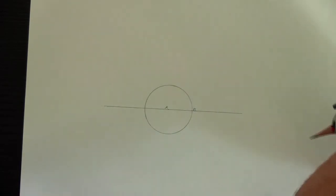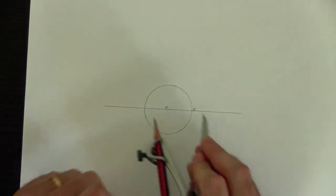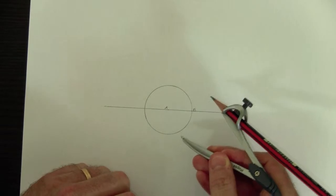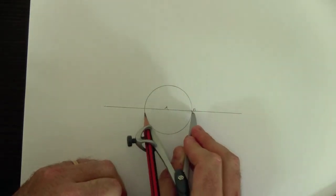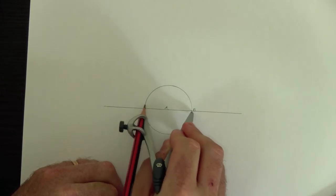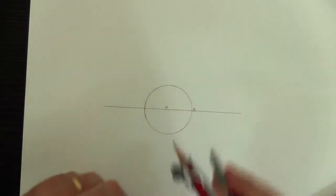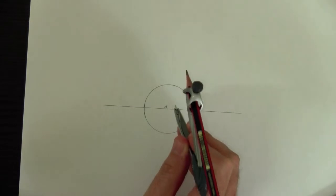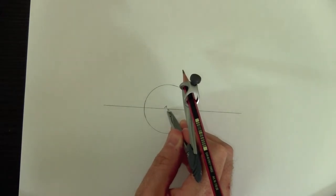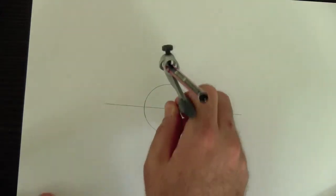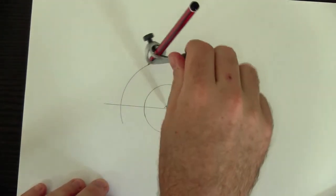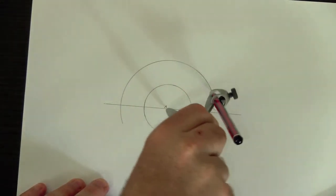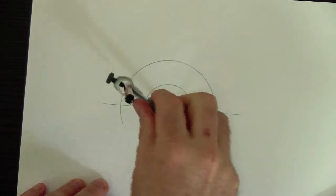Then, you take the compass and you set the radius of the compass to the diameter of your circle. So, from B to this point on the edge here. Once you've done that, you put the compass point in the middle of your first circle. And you draw a great big circle now. So this big circle, the radius is twice as big as the radius of the small circle.